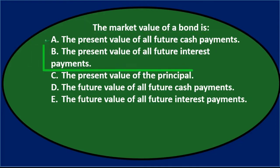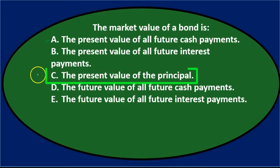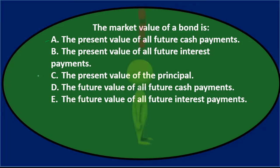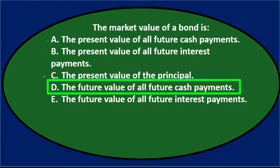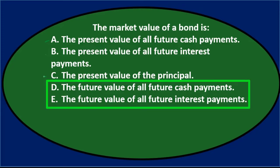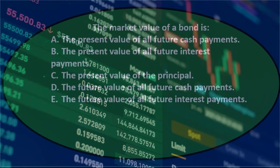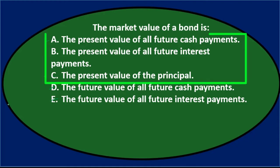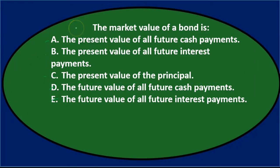Option B says the present value of all future interest payments, and C says the present value of the principal. So A, B, and C are breaking out the different combinations of payment types — we get the principal back and we get the interest back. Options D and E involve future value. Since we're looking for the price as of today, we want present value, so D and E are eliminated.